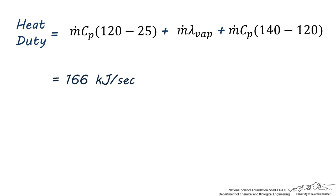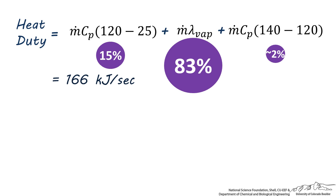This is actually a lot of energy per second, so it's important to understand why this number is so large. Only around 2 percent of this 166 kilojoules per second is used to heat up the stream from 120 to 140 degrees centigrade. Around 15 percent of the total heat duty is used to heat up the stream from 25 to 120 degrees centigrade, while an overwhelming 83 percent is used to not even heat up the stream at all, but to just change its phase from liquid to vapor.